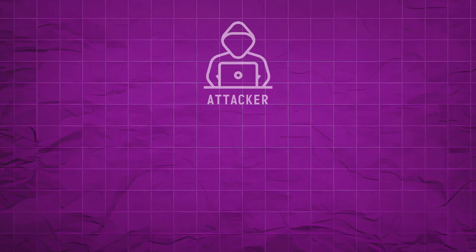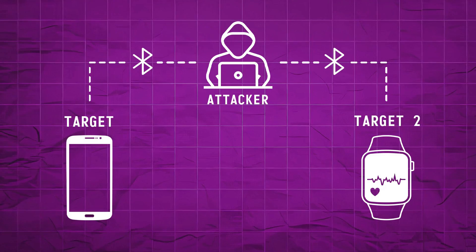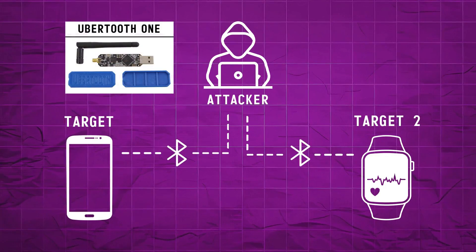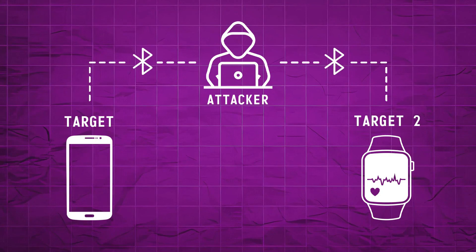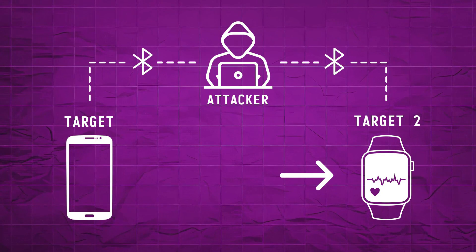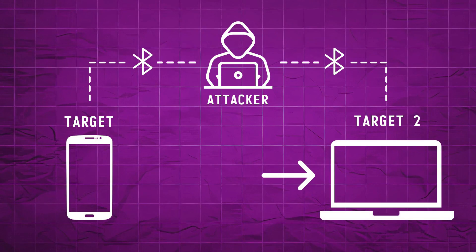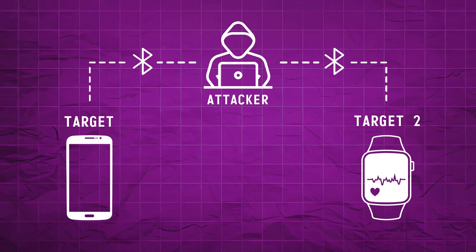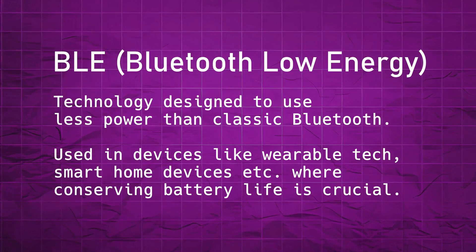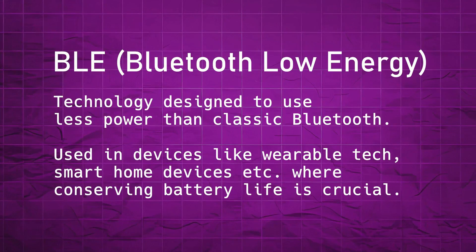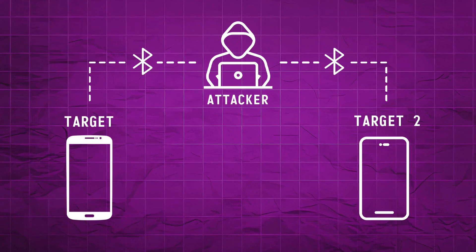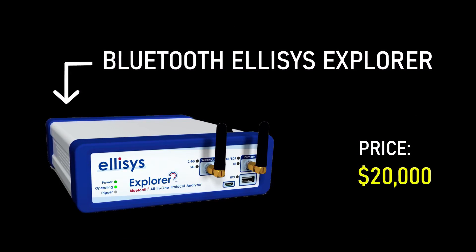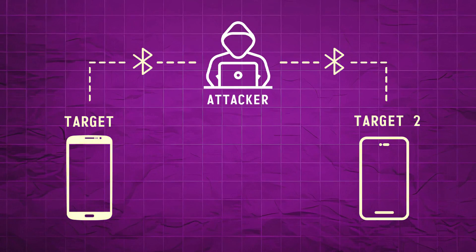Number four is a Bluetooth Interception attack. Here an attacker places themselves in between two communicating devices using a tool like Ubertooth One, and then sniffs or captures the traffic between them using Wireshark. A heartbeat sensor is used as an example here because this attack is usually done on devices that use BLE, or Bluetooth Low Energy technology. For a device using classical Bluetooth, an attacker would need a much higher-end device like the Bluetooth Elysis Explorer in order to sniff their traffic effectively.